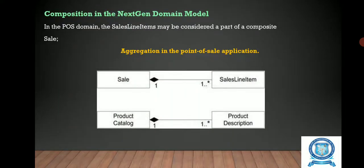Now let us see about composition in the next-gen domain model. In the point of sale domain, the sales line item may be considered as part of a composite sale. This diagram shows the aggregation in the point of sale application — the filled arrows represent aggregation. Sale is a class, sale item, line item is a class, product description, and product catalog. The multiplicity values shown are one-to-many on one side and one on the other.